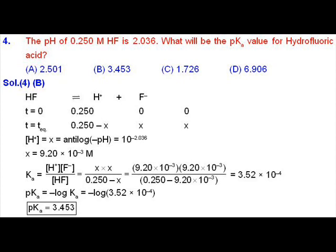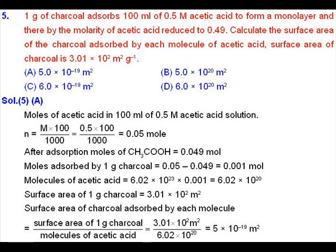In order to find the pKa value we will take its negative log. The negative log of Ka, which is 3.52 × 10⁻⁴, will be 3.453. So that will be the final answer — option B will be the correct one.